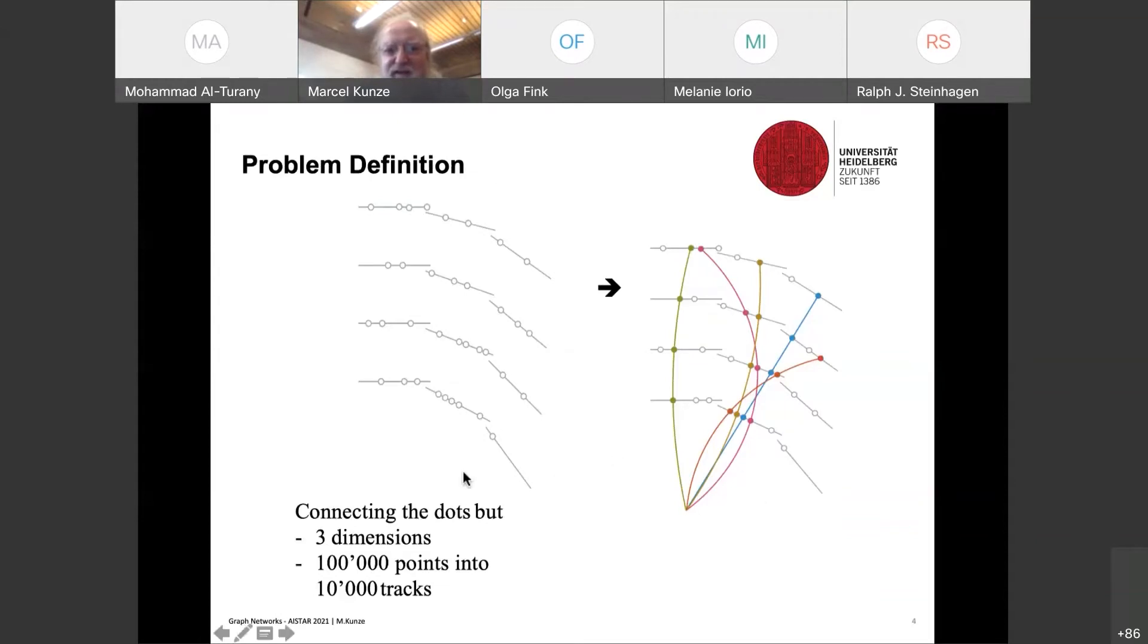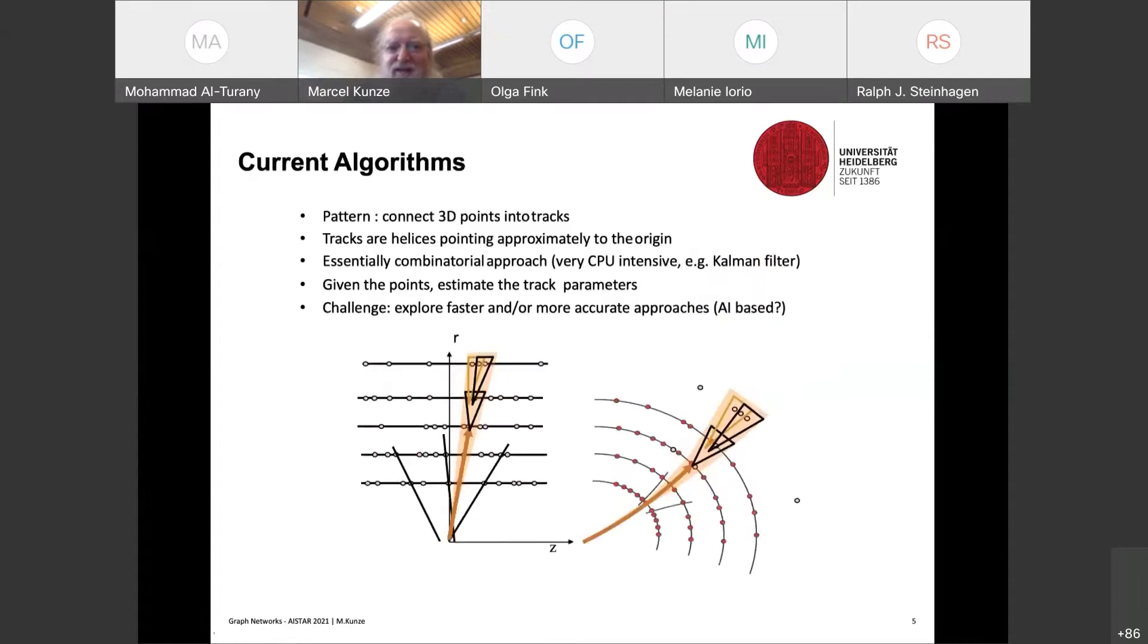And the question is, how can we tackle this problem to reconstruct these 10,000 tracks in this environment? So the problem definition is as follows. You have this all silicon tracking device as shown here. Then you have the dots in three dimensions. And the task is then to reconstruct from the dots these tracks in three dimensions, which is very demanding. The current algorithms, if you think, if you are an expert, you know this, you have, for instance, Kalman filters and you have essentially a combinatorial approach.